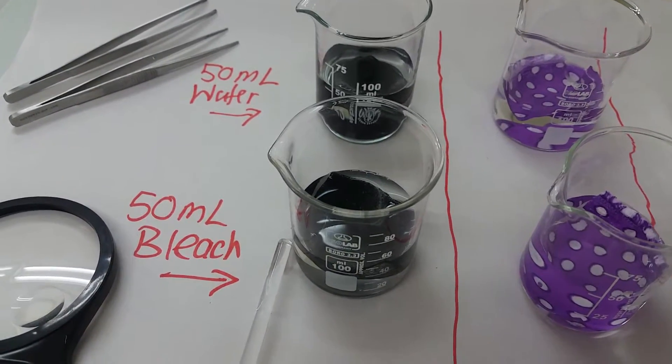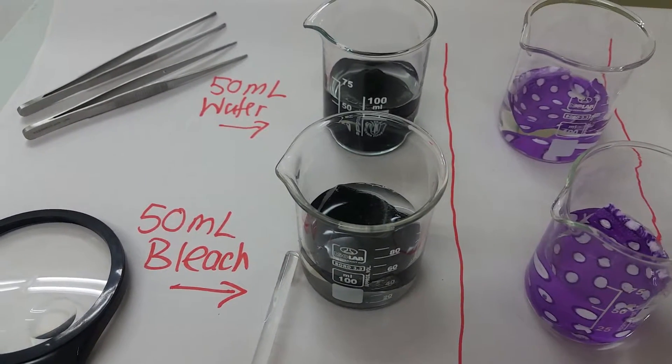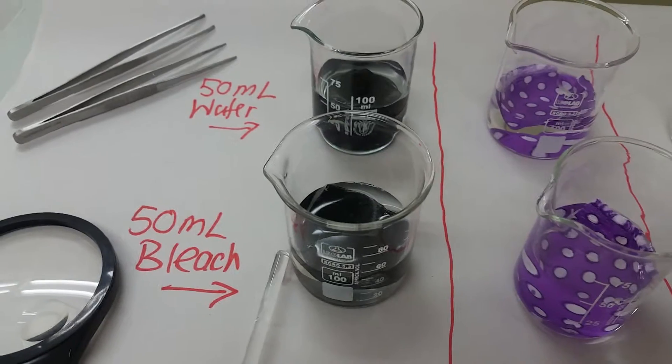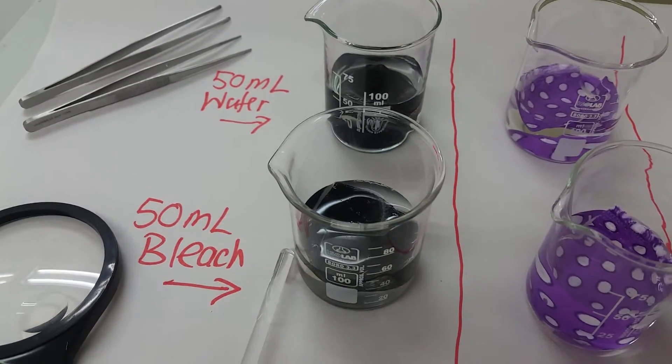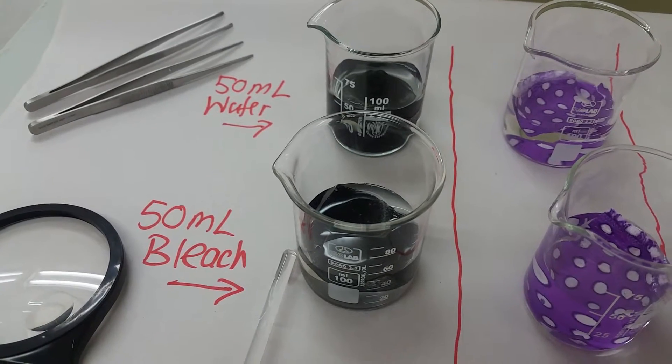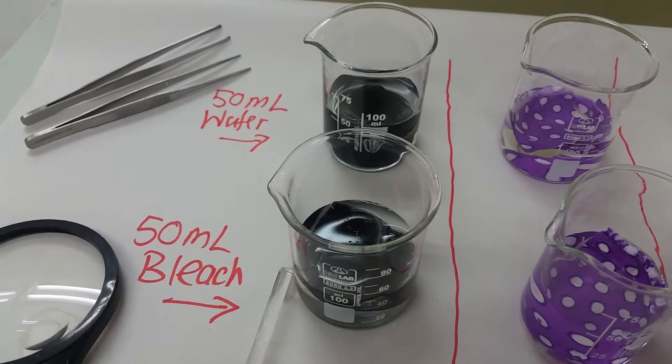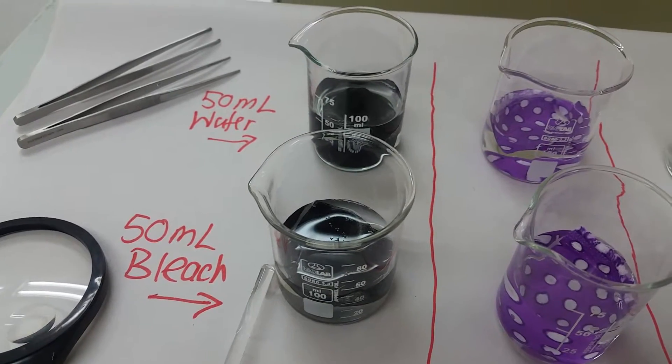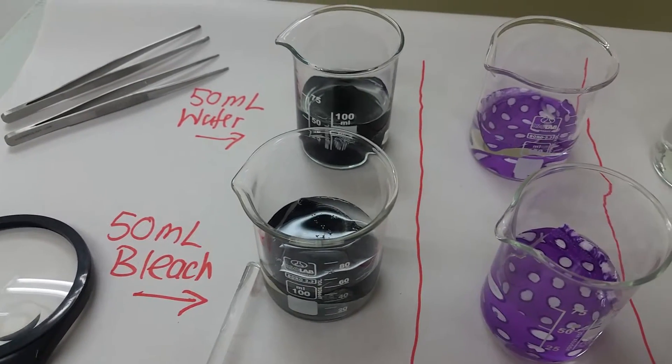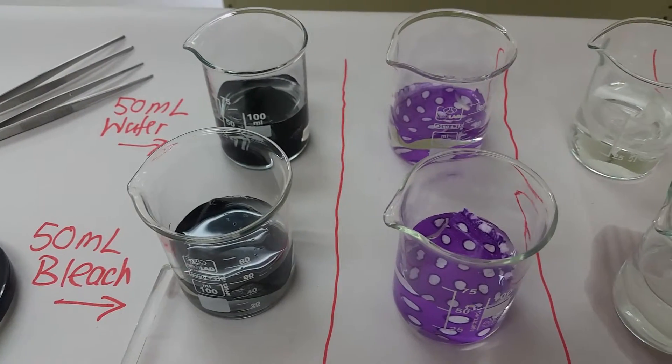I decided to use 50 milliliters of bleach and 50 milliliters of water. The reason I'm doing bleach and water is because when I take this out, I can see the difference between what the material looked like if it was treated with the bleach compared to a control where I don't expect anything to happen when it's sitting in water.